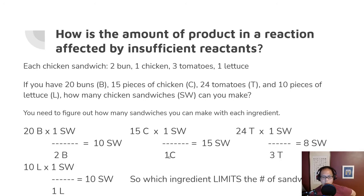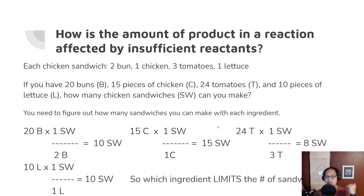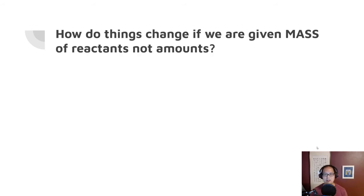15 chicken × (1 sandwich / 1 chicken) = 15 sandwiches. 24 tomatoes × (1 sandwich / 3 tomatoes) = 8 sandwiches. 10 lettuce × (1 sandwich / 1 lettuce) = 10 sandwiches. Which ingredient limits the number of sandwiches we can make? The answer is tomatoes — because after we make eight sandwiches, we're out of tomatoes and can't make any more. So tomatoes are the limiting reagent.